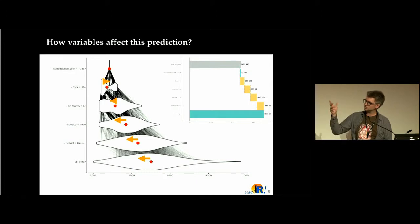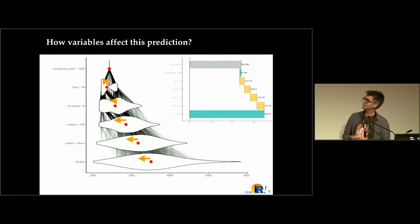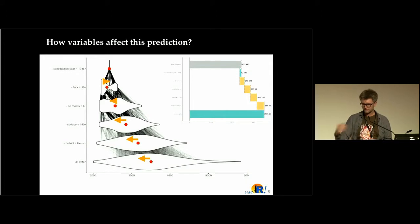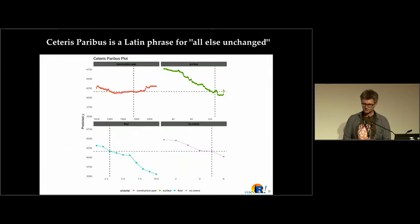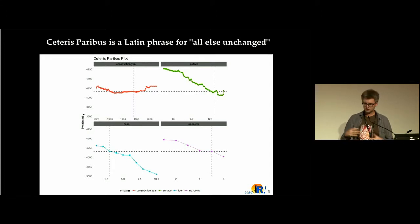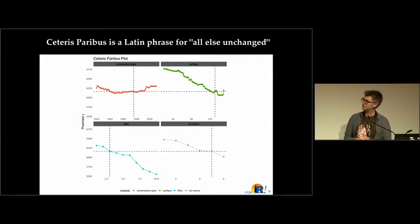You can turn this reasoning into a plot that decomposes the final prediction into pieces. It's very useful because you can say that because of this variable, you gain something of this size. There are some other plots in the DALEX package that help you understand what is going on with your black box model.